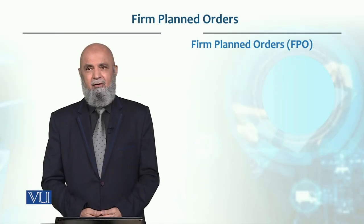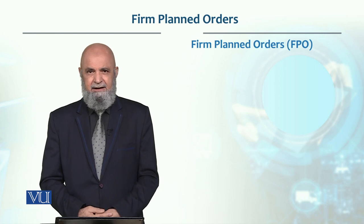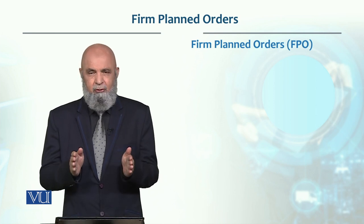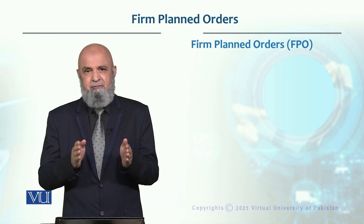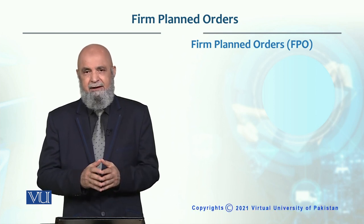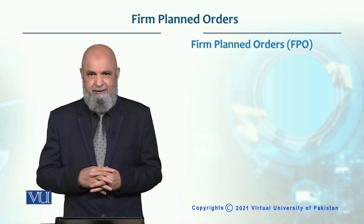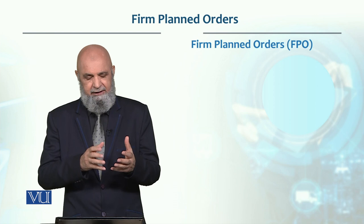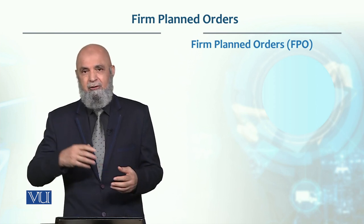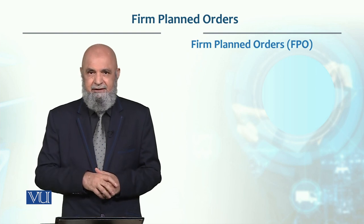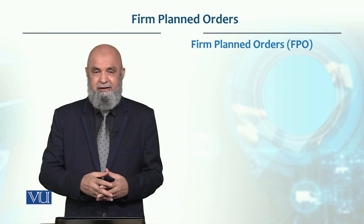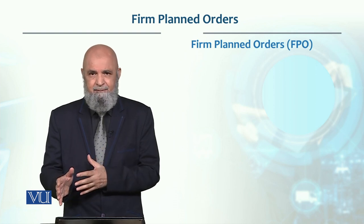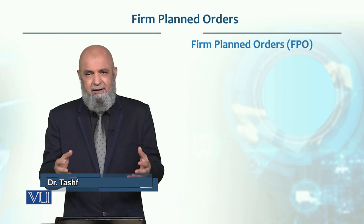There is something called Firm Planned Orders. Firm Planned Orders basically refers to when production is happening and the operations manager or production manager does not want to make changes in their plans. There are many issues, and usually conflicts happen between sales people and production people on this basis.